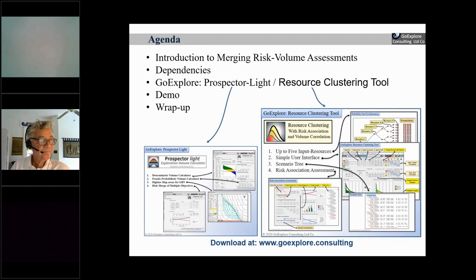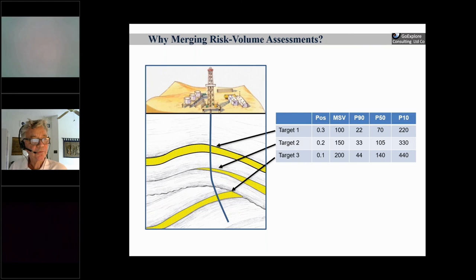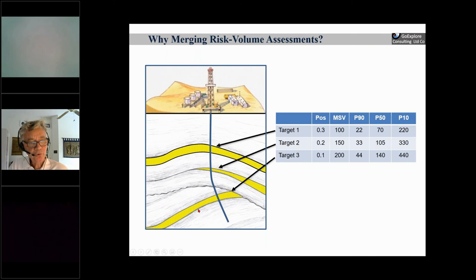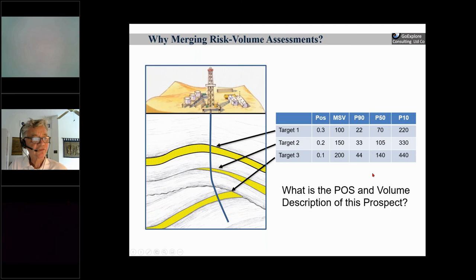So why do you want to merge risk-volume assessments? I call it a risk-volume assessment because there's a risk part and a volume part. An example is a well we're planning to drill with three targets: an anticlinal target, a pinch-out target, and a conformity trap target. All those targets have their own probability of success and their own volume description. The question becomes: what is the combined probability of success and volume description of the entire prospect?